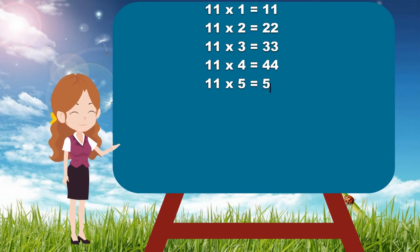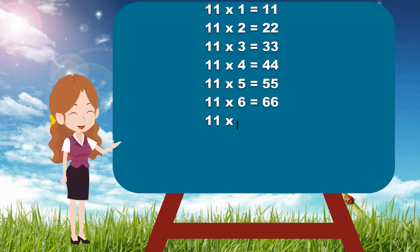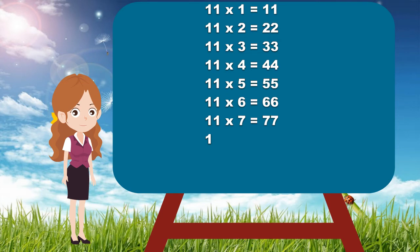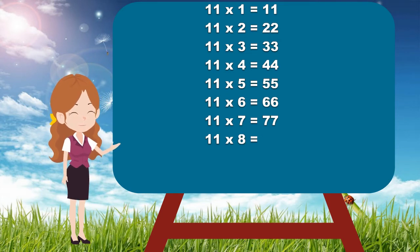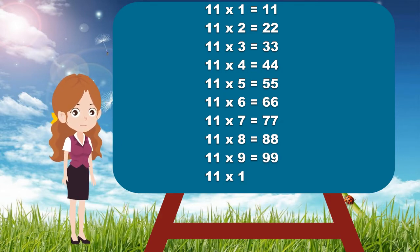11 sixes are 66. 11 sevens are 77. 11 eights are 88. 11 nines are 99. 11 tens are 110.